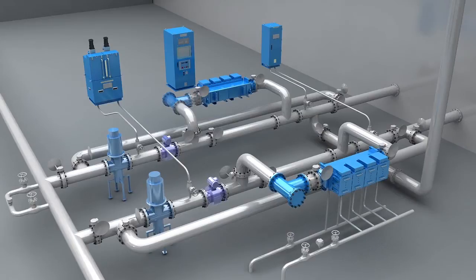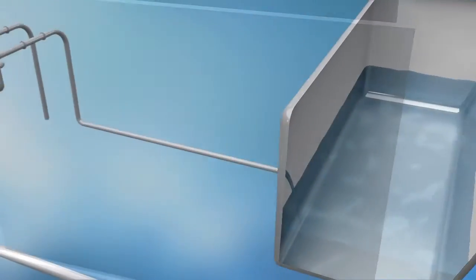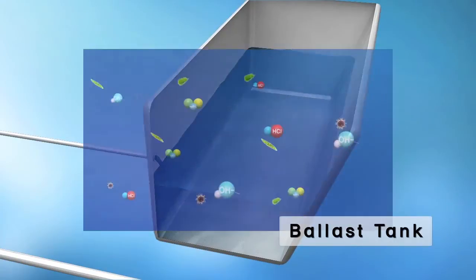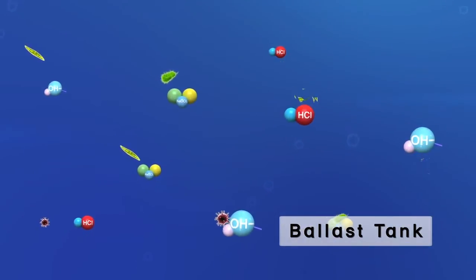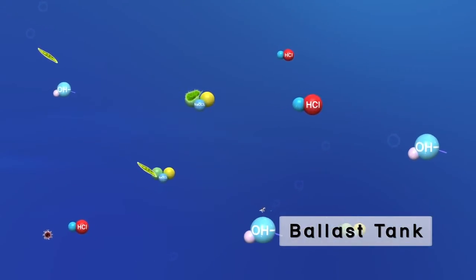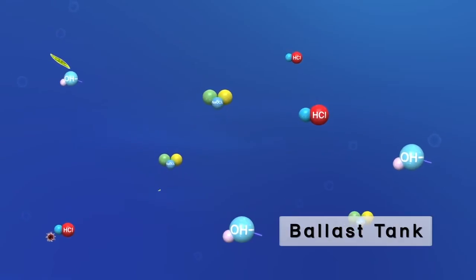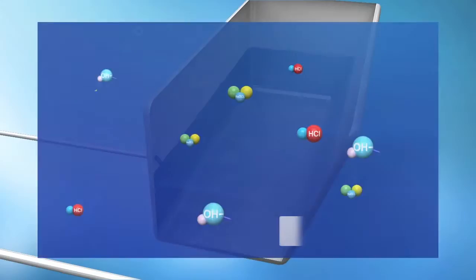After treatment, the treated ballast water is stored in the ballast tank during the voyage. During this period, TRO, the residual hypochlorite, remains active in the ballast tank, preventing any regrowth of microorganisms for up to 30 days after treatment.